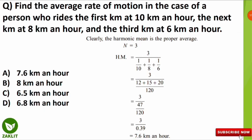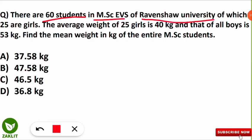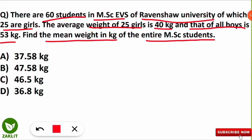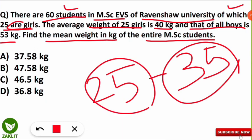The next question: there are 60 students in MSc Environmental Science at Ravensai University, of which 25 are girls. The average weight of the 25 girls is 40 kg and that of all boys is 53 kg. Find the mean weight in kg of all MSc students. Since 25 are girls, the boys = 60 − 25 = 35.